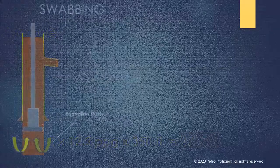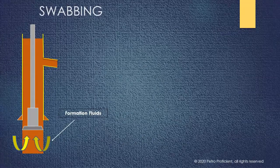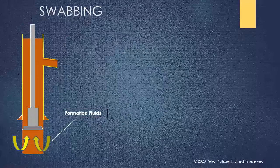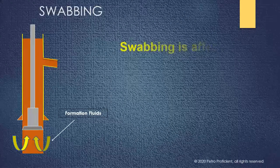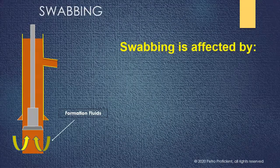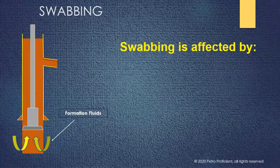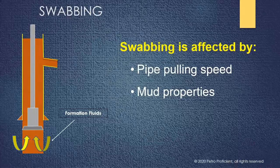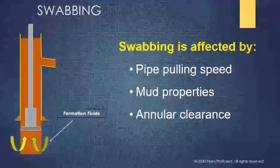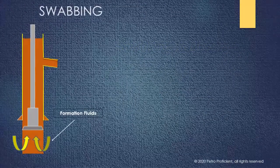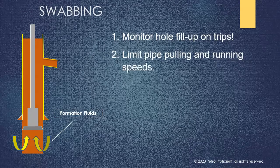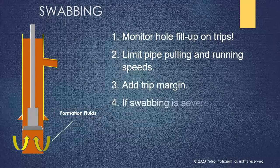Swabbing is the reduction of pressure in a wellbore caused by pipe movement. If pressure is reduced sufficiently, reservoir fluids may flow into the wellbore causing a kick. Swabbing is affected by pipe pulling speed, mud properties, and annular clearance. To prevent swabbing: monitor hole fill-up on trips, limit pipe pulling and running speeds, add trip margin, and if swabbing is severe, consider pumping out of hole.